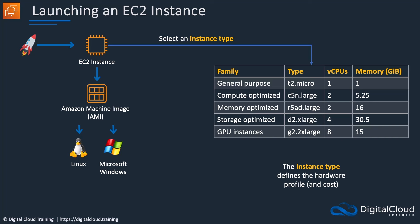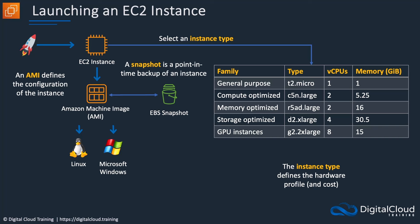You can choose an AMI that has Windows with a Microsoft SQL Server database installed, for example. The AMI defines the configuration of the instance, including the operating system, any software that's installed, and how the virtual drives — the EBS volumes — are defined. These are backed by what's called a snapshot; the actual data is stored in a snapshot. Snapshots are taken from live instances as a kind of backup, and then we create an AMI from them and can keep launching more instances that are the same as the original. A snapshot is a point-in-time backup of an EC2 instance.